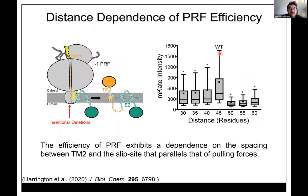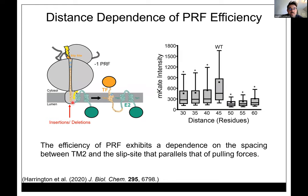It turns out the distance between the slippery sequence and the TM domain in alphaviruses is never less than 43 and never more than 47 amino acids — all these viruses have a very specific spacing coinciding with a maximum pulling force. We tested this by making insertions and deletions in the loop region between the helix and the slip site.